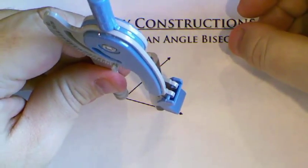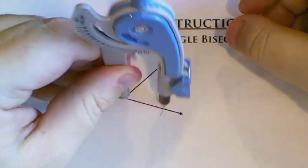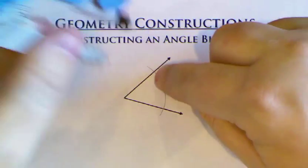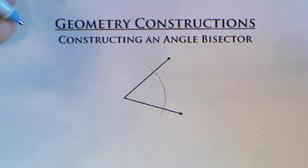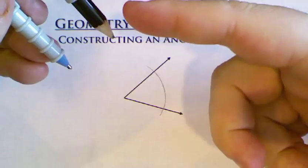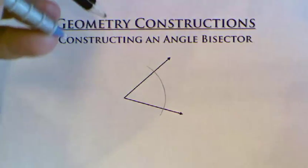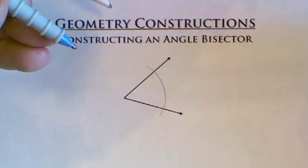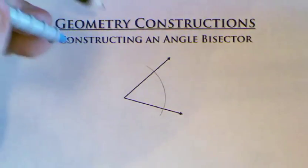And like a copy angle construction, the first thing we're going to do is make an arc which crosses both sides of the angle. For the next step, you can change the size of your compass if you want. I don't really think there's a need to. If you made a size of the compass which is convenient for you, then why would you change the size?